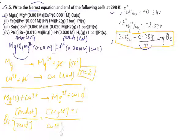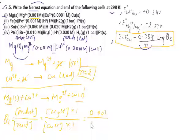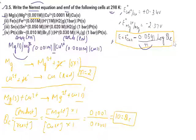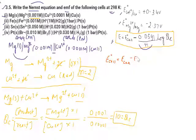For solids, concentration is taken as 1. So QC = [Mg²⁺] / [Cu²⁺]. The concentration of Mg²⁺ is 0.001 M and Cu²⁺ is 0.0001 M. Calculating QC gives a value of 10.